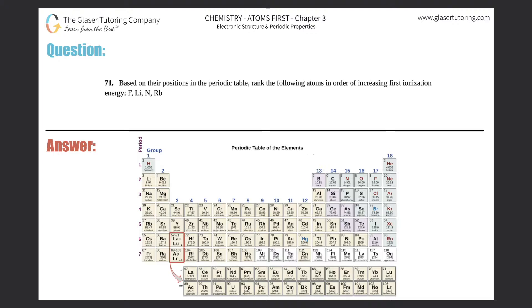Number 71. Based on their positions in the periodic table, rank the following atoms in order of increasing first ionization energy: F, Li, N, and Rb. All right, so we need to rank these as far as first ionization energy.